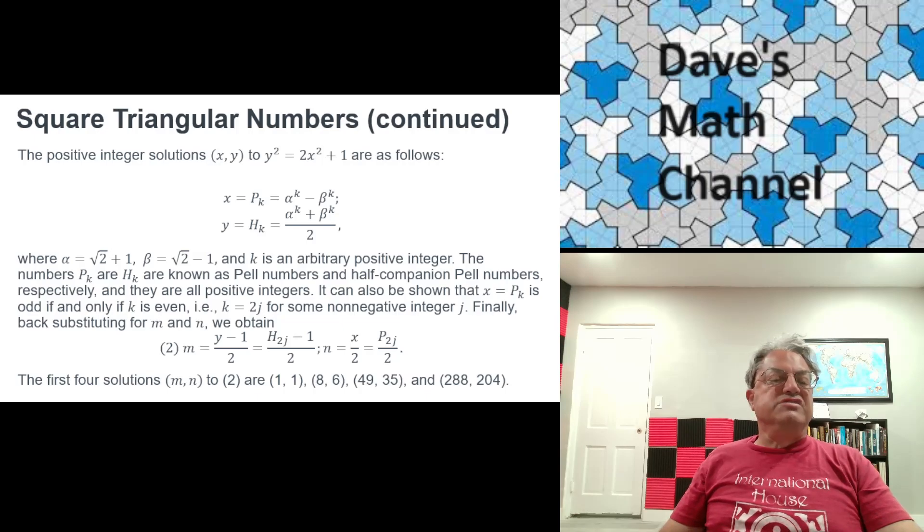And remember what I said that x had to be even, so pk has to be even? Well, it turns out that pk is even if and only if its index k is even. So our general solution is going to be x equals p2k and y equals h2k. But now, remember, we didn't want x and y, we wanted m and n, and we have to backtrack.